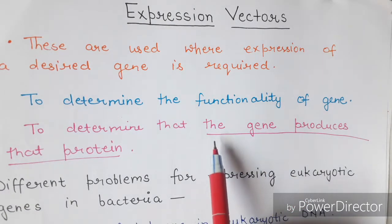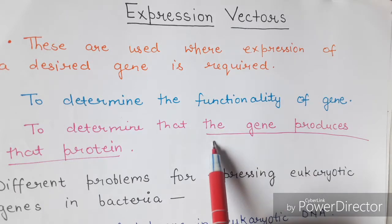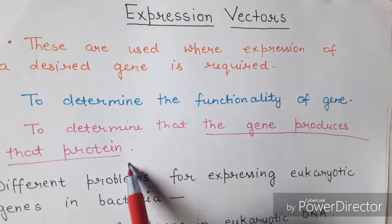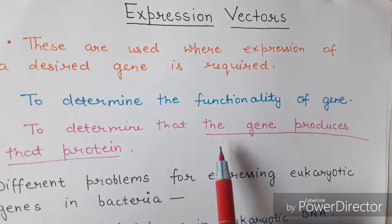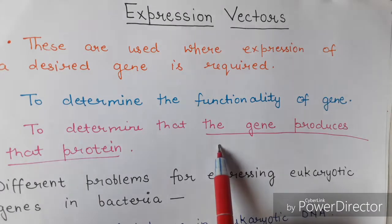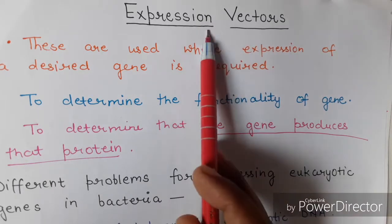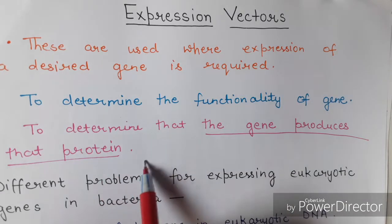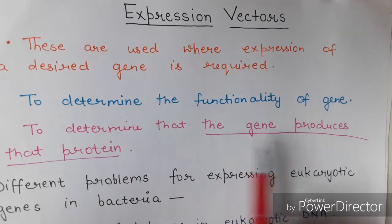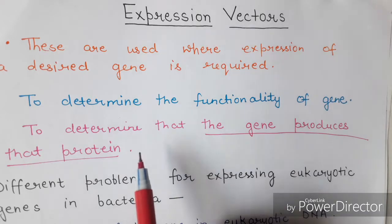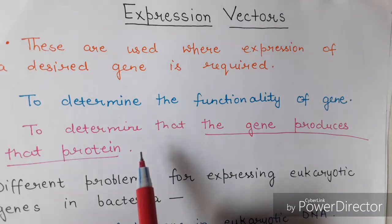Expression vectors are also used to determine the gene that produces a particular protein. For example, if we want to know that a particular gene sequence is responsible for the production of catalase enzyme, we place that gene into the expression vector and obtain our desired protein. This confirms that the gene is responsible for forming that protein. Expression vectors differ from cloning vectors in that they are used for the expression of a particular protein.